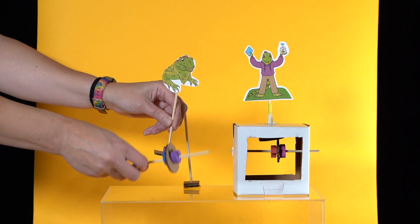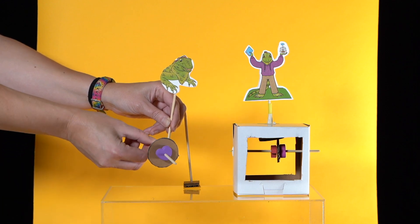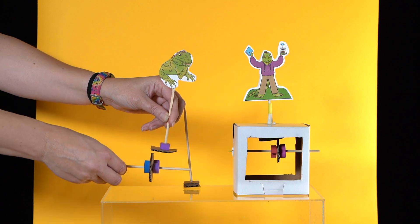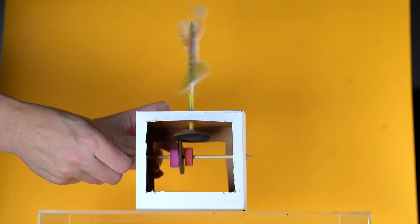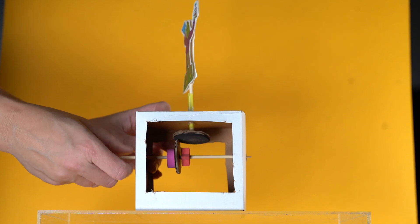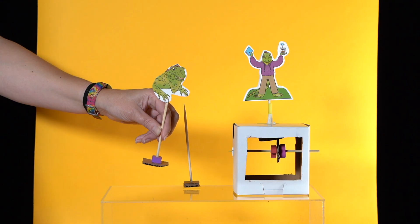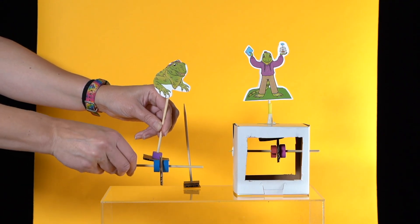The round cam with the axle going through the center makes the cam follower spin around and around. To make it spin, the cam must be slightly off to the side of the cam follower.